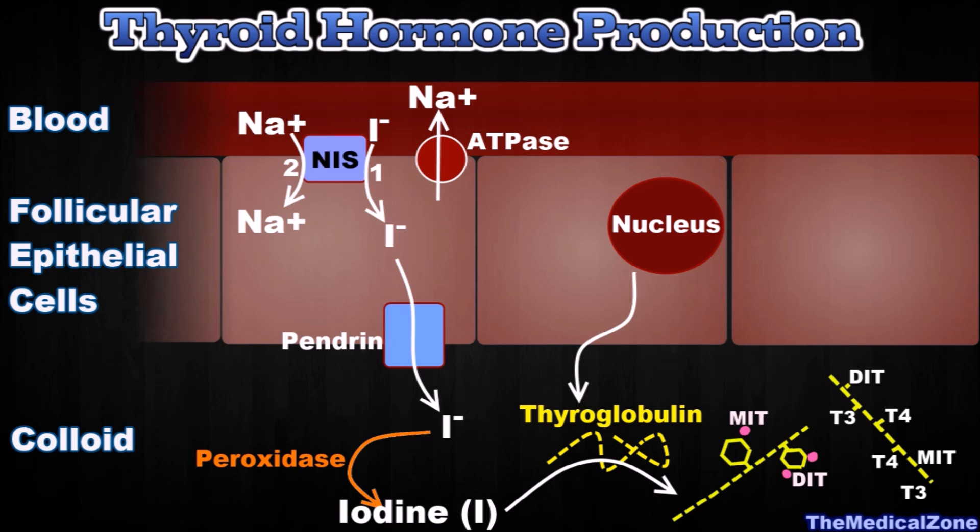Interestingly, in this form the thyroid hormones are stored in the follicles in an amount sufficient to supply the body with its normal requirements of thyroid hormones for two to three months. Therefore, when synthesis of thyroid hormone is decreased, the physiologic effects of deficiency are not observed for several months.